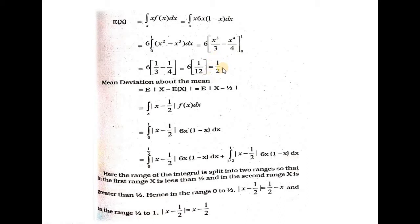Now we go to the mean deviation about the mean. The equation is E of mod x minus E of x. The value of E of x is 1 by 2. So we need E of mod x minus 1 by 2, which is the integral of mod x minus 1 by 2 times f of x dx.